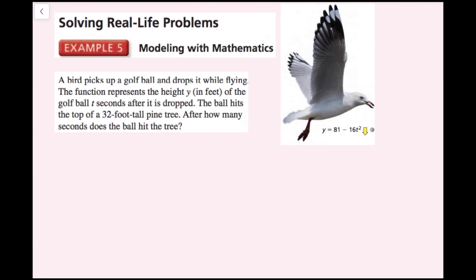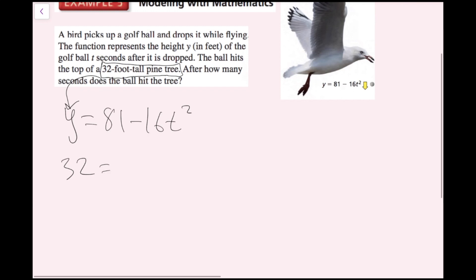For example 5: a bird picks up a golf ball and drops it while flying. The function y equals 81 minus 16t squared represents the height y in feet of the golf ball t seconds after it is dropped. The ball hits the top of a 32-foot-tall pine tree. After how many seconds does the ball hit the tree? We know that y represents the height, and we want the height to equal 32, so we plug in 32 for y to get 32 equals 81 minus 16t squared.